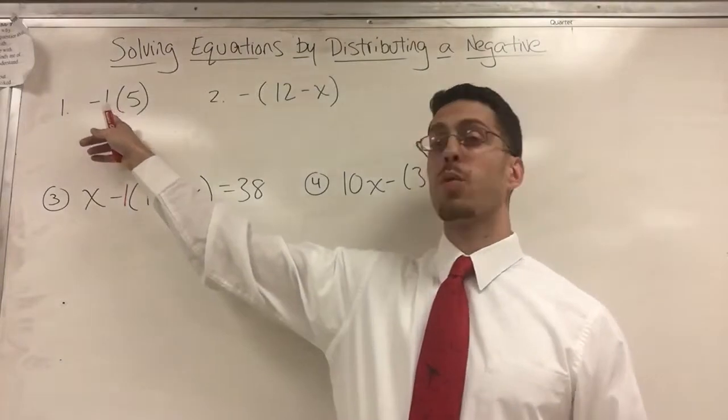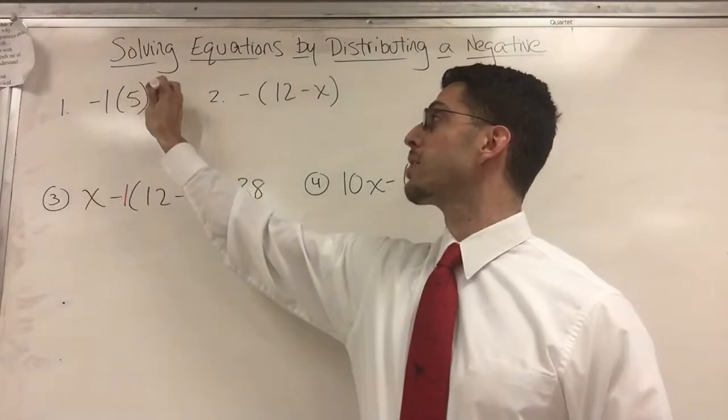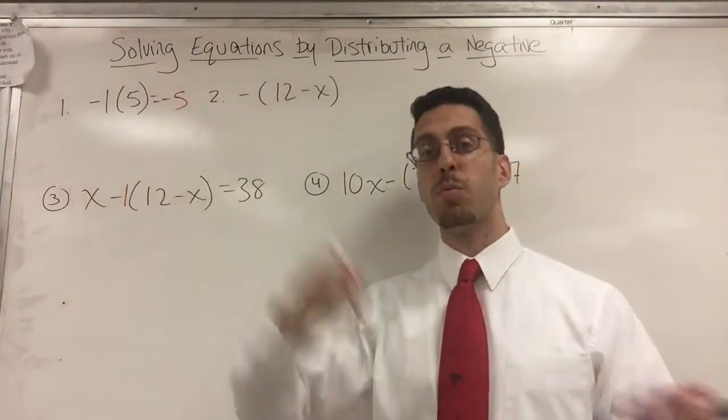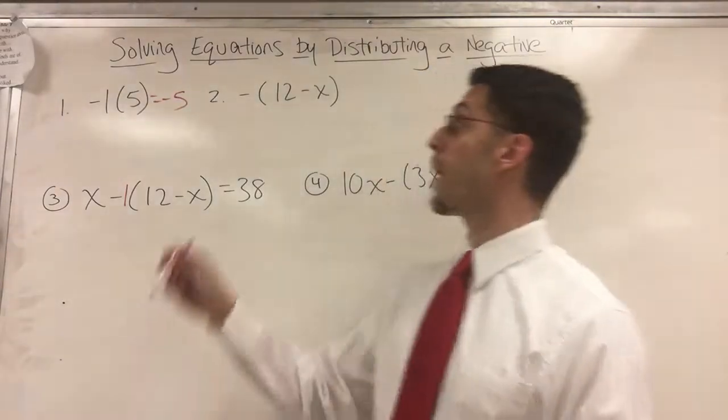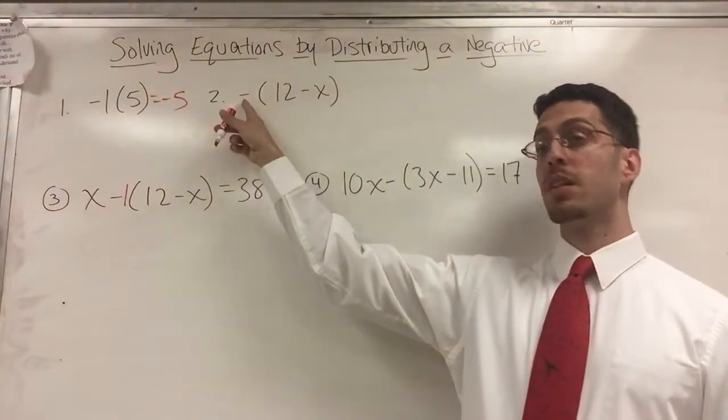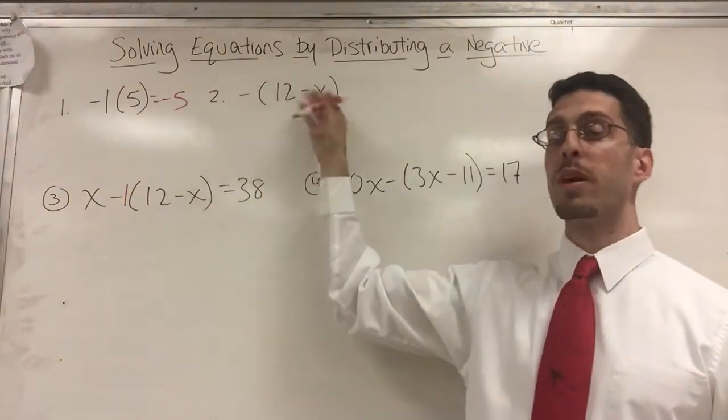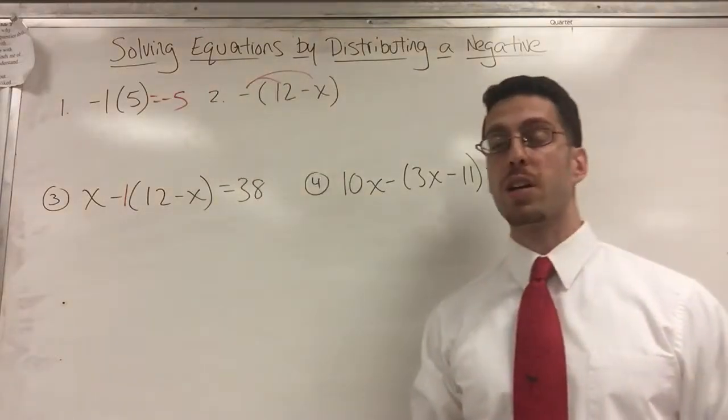And the same thing is going on over here. So you should be comfortable with multiplying by negative one, and negative one is really just saying opposite. In English, negative one means the opposite. So here I'm saying what's negative one times five. I'm really saying what is the opposite of five? Well, that's negative five.